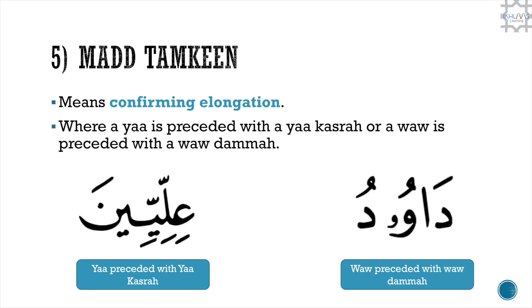Number 5, mad tamkeen, which means confirming elongation. This is where a yaa is preceded with a yaa kasra, or a waaw is preceded with a waaw damma. For example: Daawoodoo, Illiyena.